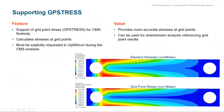Motion Solve now supports writing grid point stresses in the flex body to the results. This is useful for downstream analysis such as fatigue, where grid point stresses are needed. The GP stress should be requested in OptiStruct during the CMS flex body generation and should be available in the flex H3D.